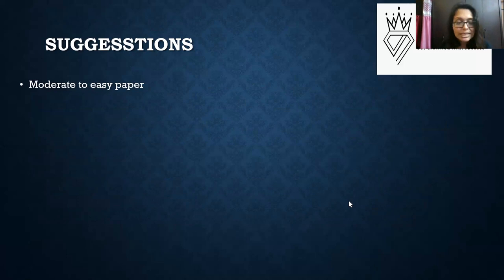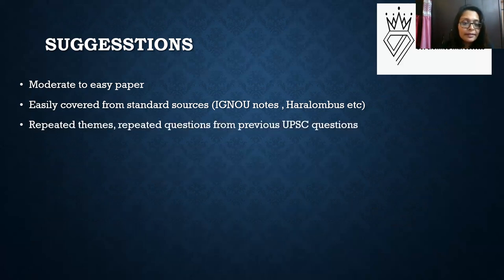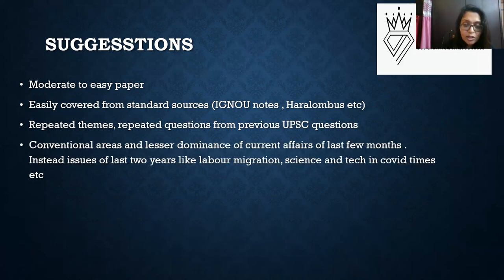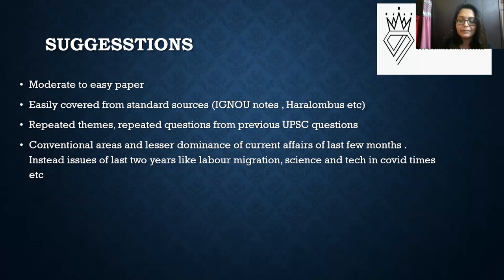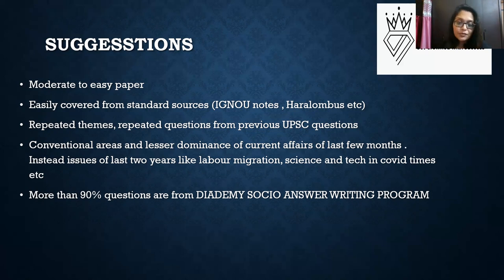Overall suggestions: this is a moderate to easy paper. Standard sources — Haralambos, IGNU notes, B.K. Nagla, S.L. Doshi, and Ram Ahuja — are sufficient. The paper features repeated themes and questions from conventional areas, with lesser dominance of very recent current affairs. Labor migration, science, technology, and COVID dimensions are important, and issues of the last two years are covered. Their answer writing program covered more than 90% of the themes and questions on similar lines as asked in the UPSC Mains 2021 paper.